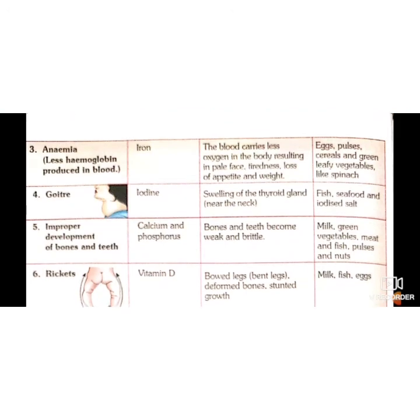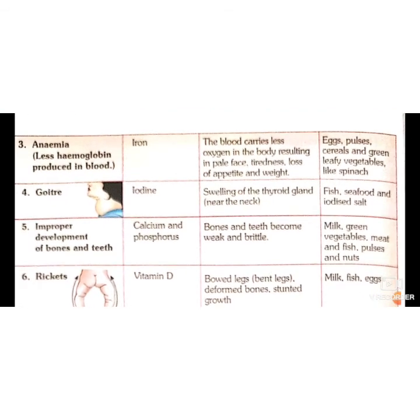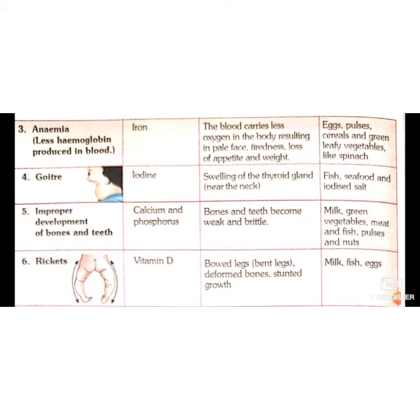Next is anemia, a disease caused due to deficiency of the mineral iron. The blood carries less oxygen in the body, resulting in tiredness and loss of appetite. Foods like eggs, pulses, cereals, and green vegetables should be given to those suffering from anemia.